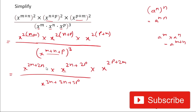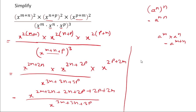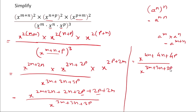Now the base in the numerator is the same — x — so we add the powers: x to the power (2m+2n + 2n+2p + 2p+2m), which simplifies to x to the power (4m+4n+4p). In the denominator we have x to the power (3m+3n+3p).